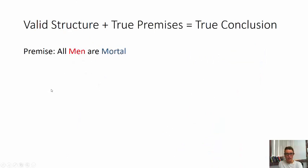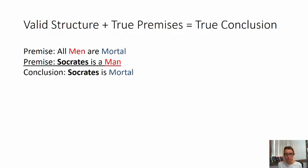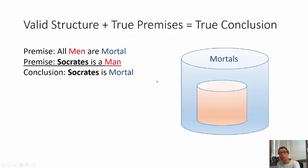That's the difference between deduction and induction. Here's another way to look at it using a bucket illustration. Take the classic argument: all men are mortal; Socrates is a man; therefore Socrates is mortal. Let's put all the mortals in the world in a big bucket. To illustrate premise one — 'all men are mortal' — all the men go into the mortals bucket.